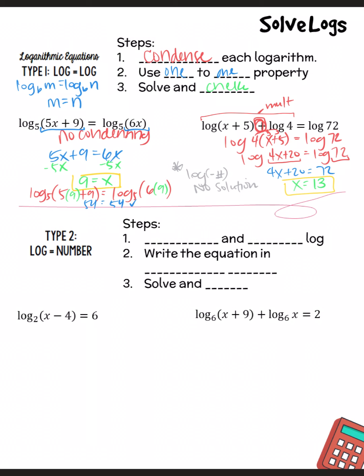Quickly, let's look at this other one. What if we've got log equaling a number? So again, we want to condense and isolate the log. So like I said, this first example, we don't need to condense, but this one's got two logs on the side, so we will have to condense that. And then we're going to write the equation in our exponential form. Remember, whenever we were rewriting log into exponential, that's the first day we started logs, and then we'll solve and check.